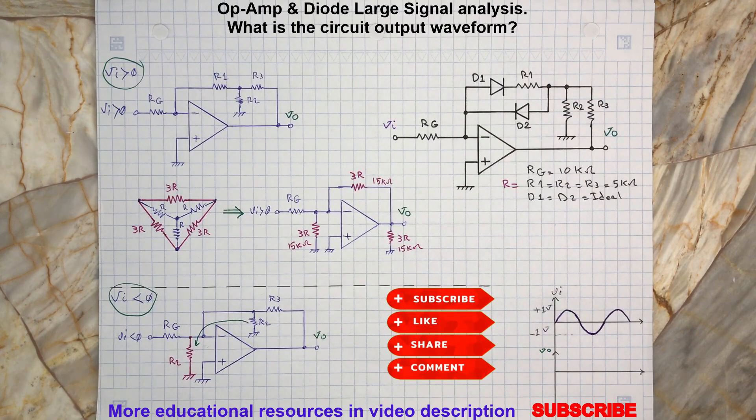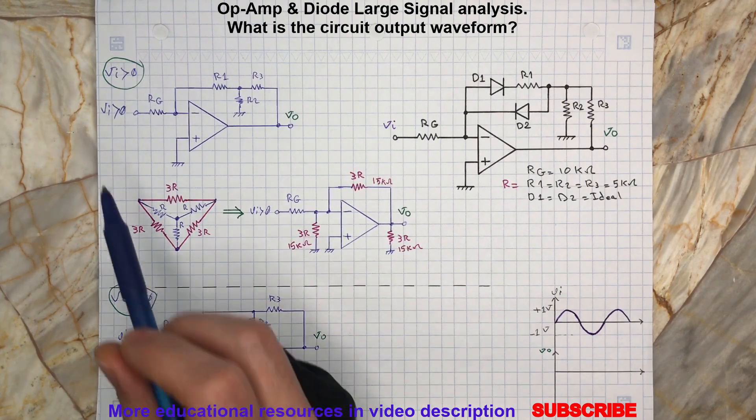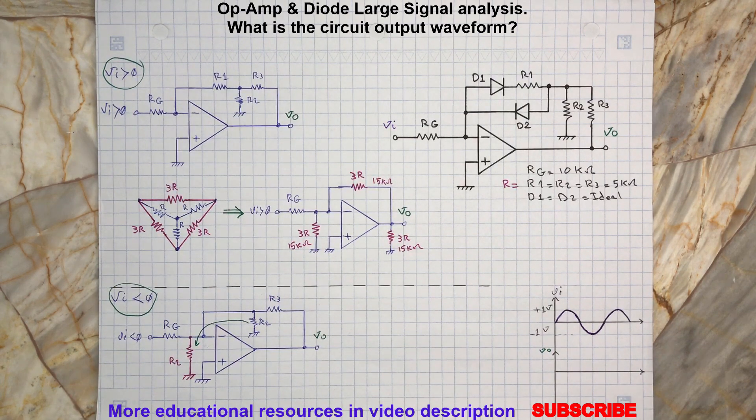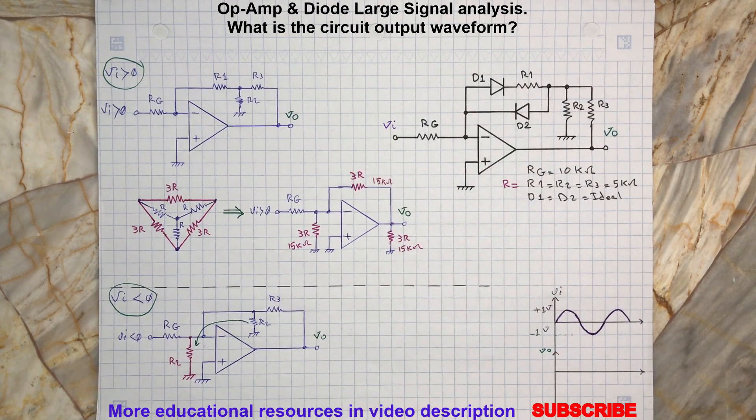Hello, today we are going to review another op-amp and diode circuit. Without further ado, let's start by analyzing the circuit by assuming the input voltage VI is greater than zero. In this scenario, the positive input voltage is applied to the inverting terminal of the op-amp through RG. This will forward bias the diode D1.